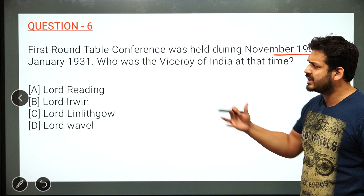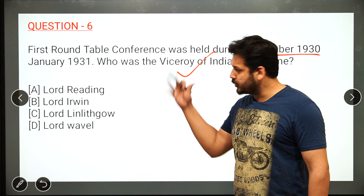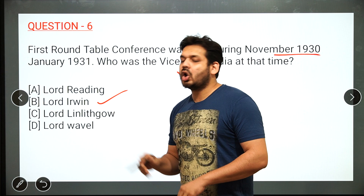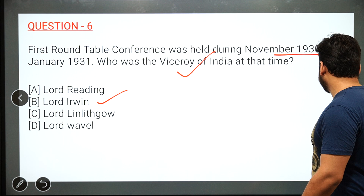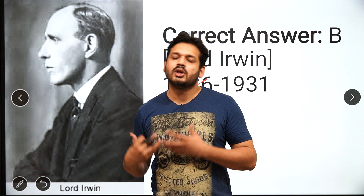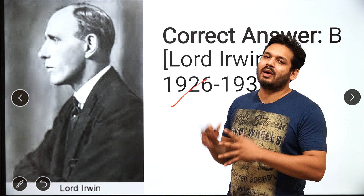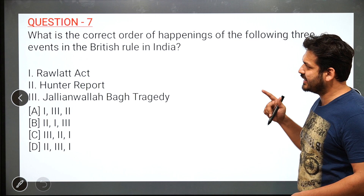Question 6 is about the First Roundtable Conference of 1930–1931. The question asks who was the Viceroy of India at that time. The answer is Lord Irwin, who served as Viceroy from 1926 to 1931. The Civil Disobedience Movement and the Salt Satyagraha started during his tenure in 1930.